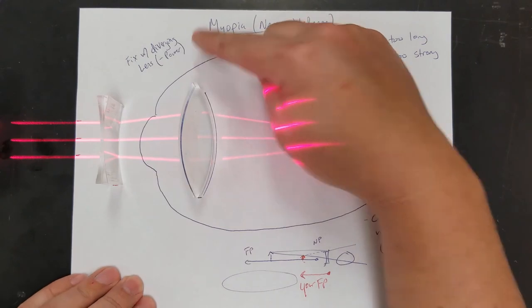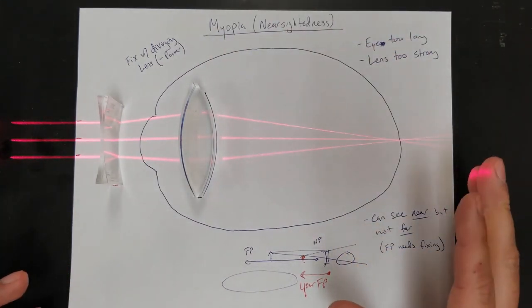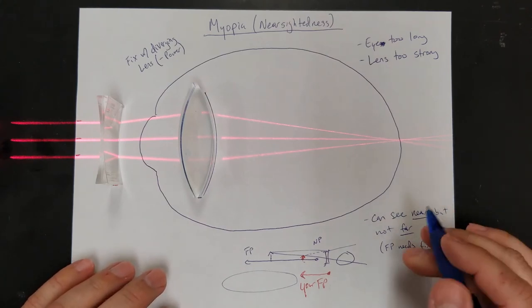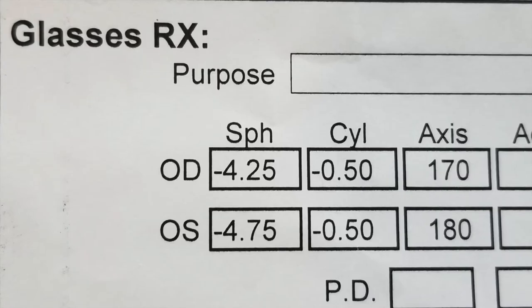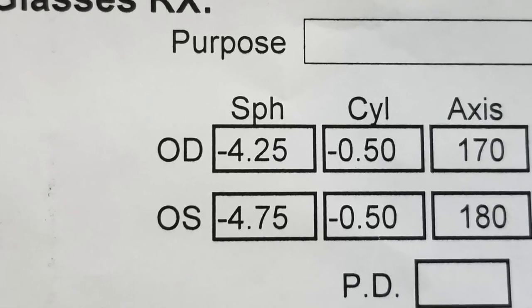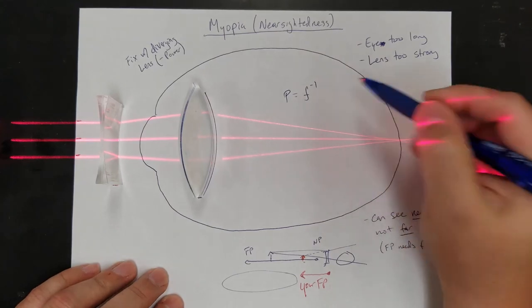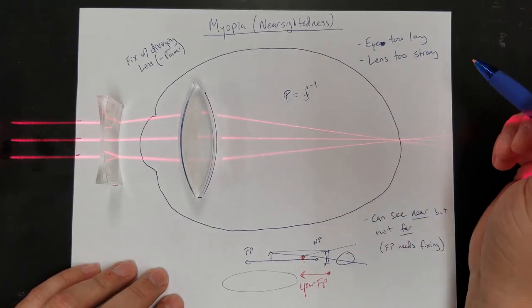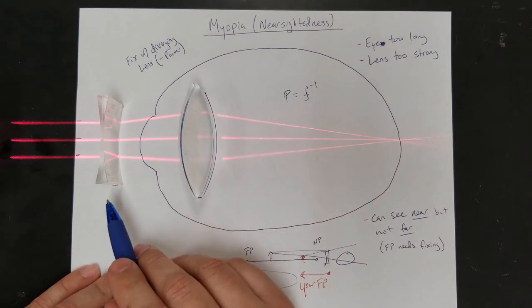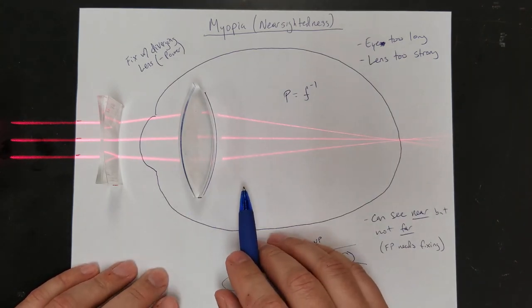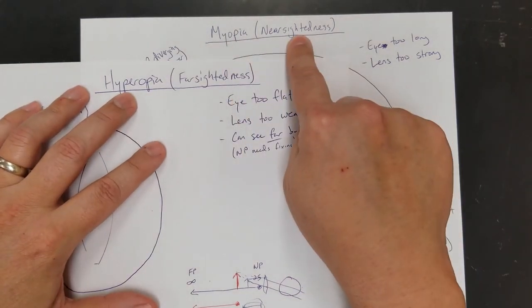In another video we'll look at how to solve vision correction problems using the power of the lens. In general, if you want to get an idea of how good or poor your eyesight is, look at your prescription. The power listed on your prescription equals the reciprocal of the focal length of the lens you need to use. The bigger the power, the stronger the lens — and the more messed up your eyes.